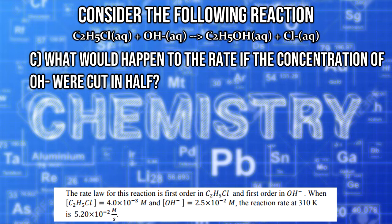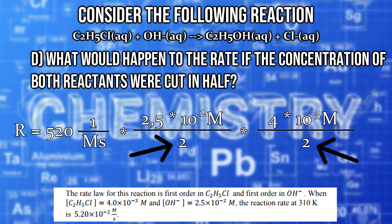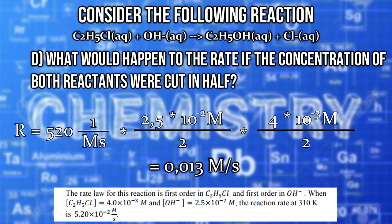And finally the last task. In this task, we need to halve not one, but both concentrations of the reactants. So, we use the same formula as in C, but this time, with both concentrations cut in half. This is a calculation. The result is 0.013 mole per second.